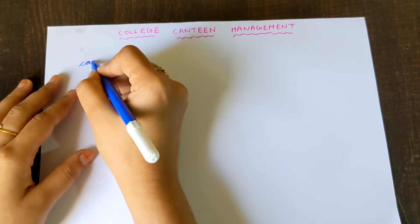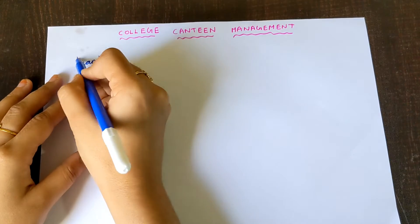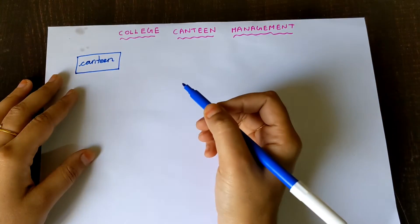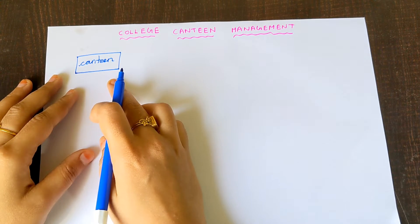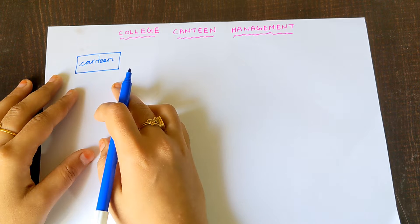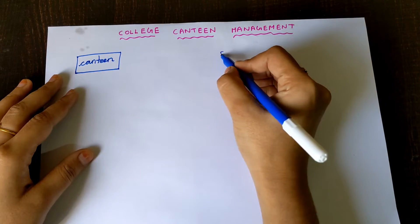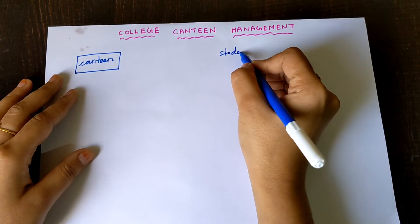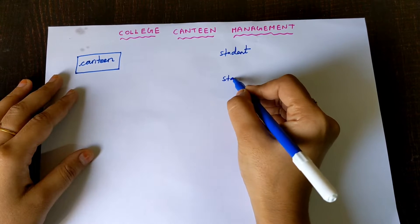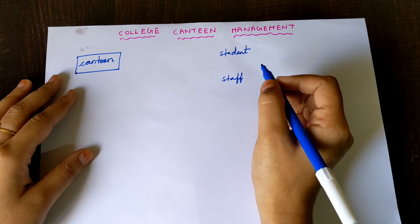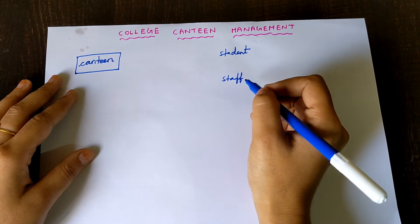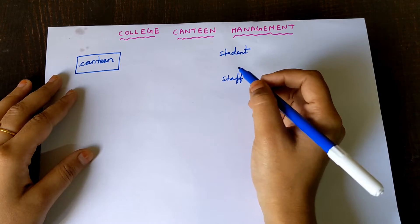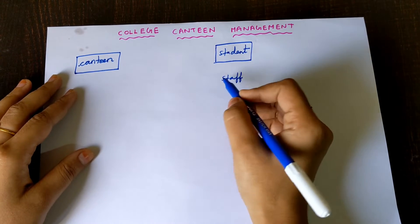So Canteen is our first entity and we must write that inside a rectangular box. Canteen is an important entity because it is an object that is physically present — it is a building you are able to touch. Next, students will go as well as staffs will go to eat something during break or lunch hours. So Student is an entity and Staff is also an entity. Both are physically existing persons, and must be written inside a rectangular box.